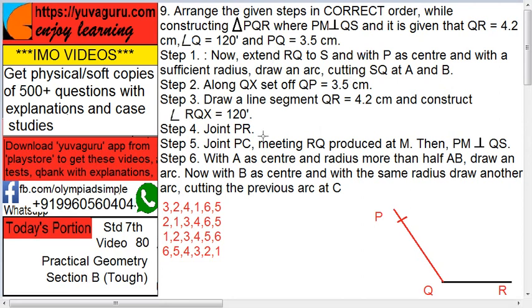Because here step 4: join P. You have to join this, then extend this ray in this line. It will be some step number 1, see this. RQ to S with P as a centre. Then draw an arc with a sufficient radius cutting SQ at A and B. See this, cut A and B.